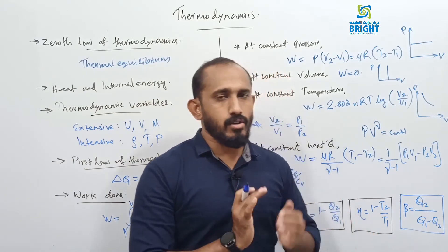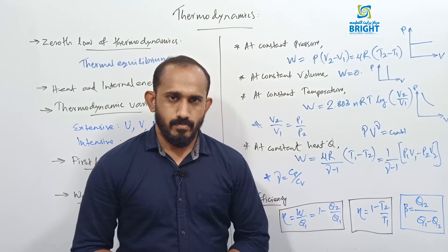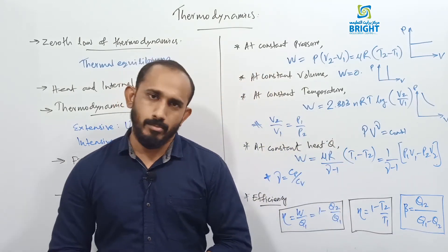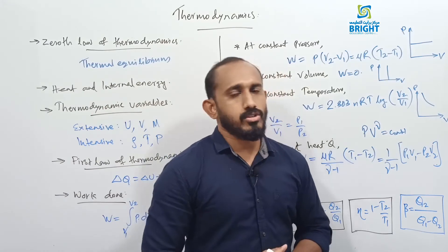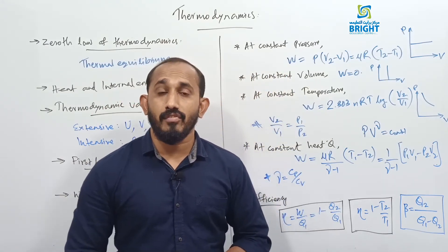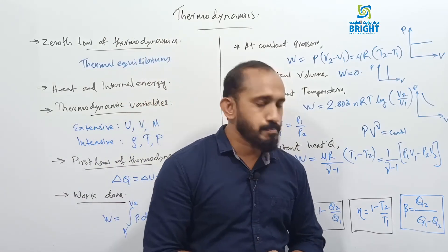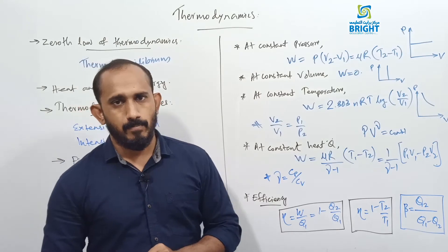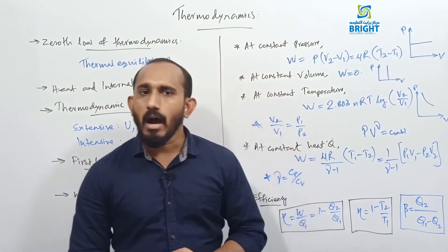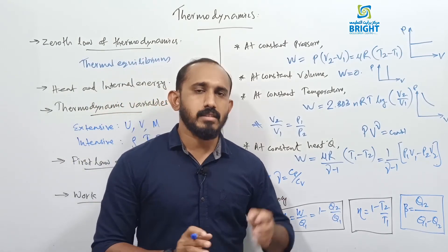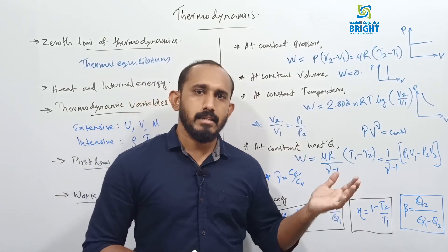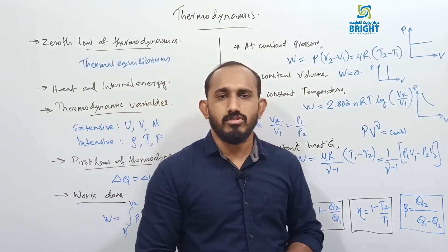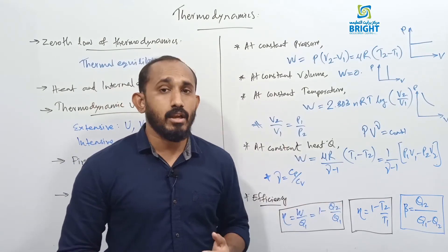The Second Law of Thermodynamics has two statements. Planck's statement deals with heat engines: no process is possible whose sole result is the complete conversion of heat into work — no heat engine is 100% efficient in a single process. Clausius's statement deals with refrigerators: it is not possible for a single process to transfer heat from a lower reservoir to a higher reservoir without doing work. These two statements are the Second Law of Thermodynamics.